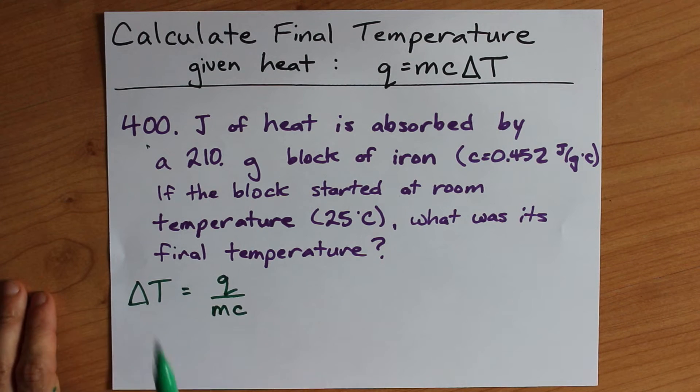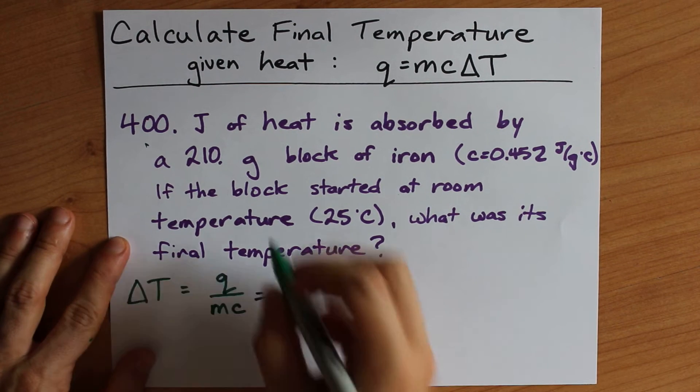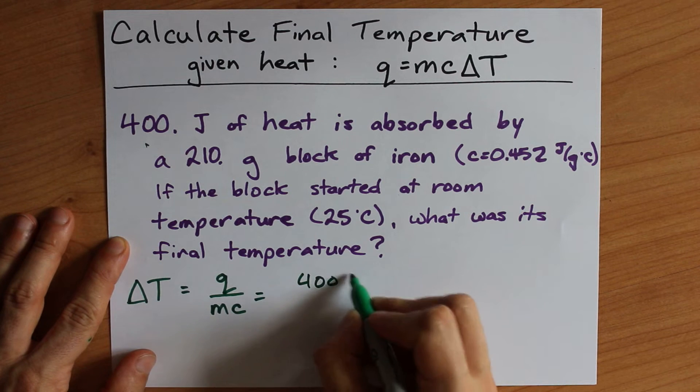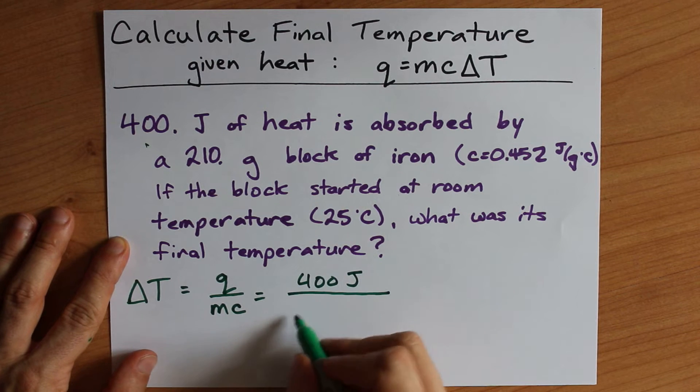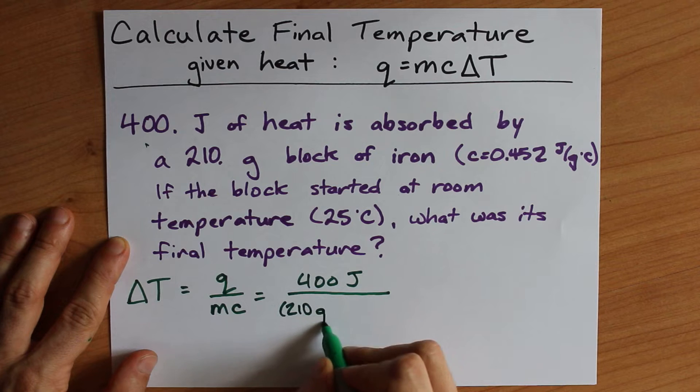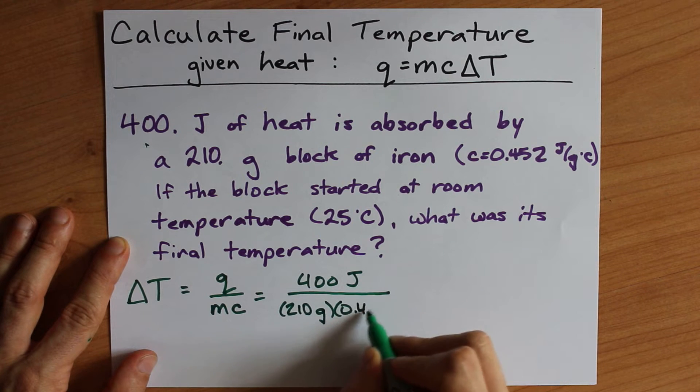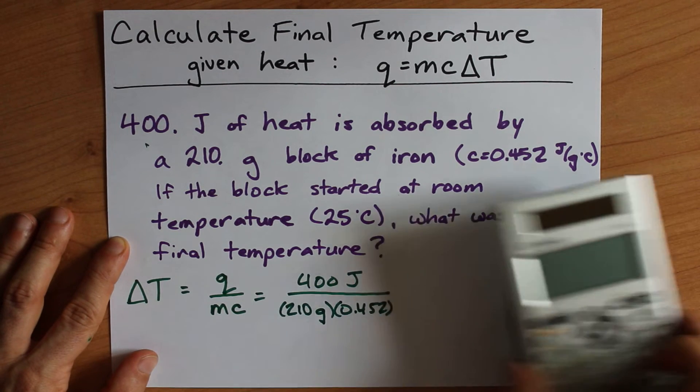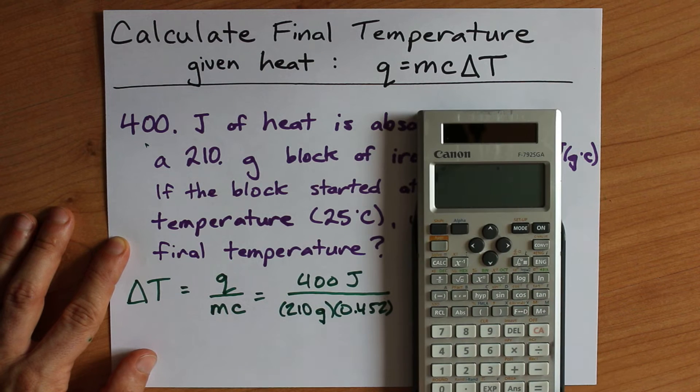Well we're going to start by calculating delta t, and we're going to do that by plugging in 400 joules for the amount of heat absorbed, 210 grams for the mass, and 0.452 for the specific heat capacity. Using this calculator,